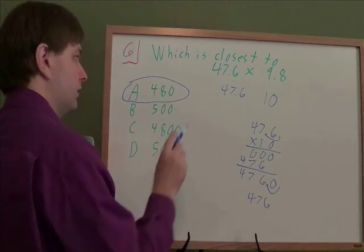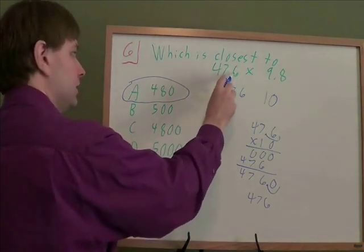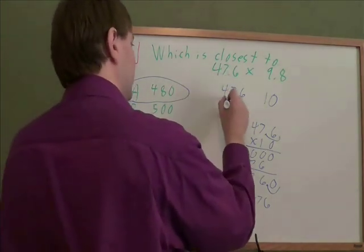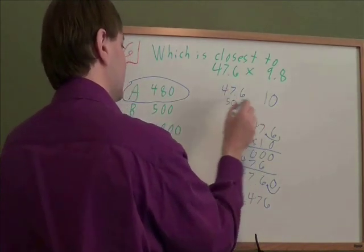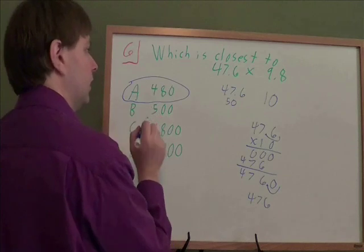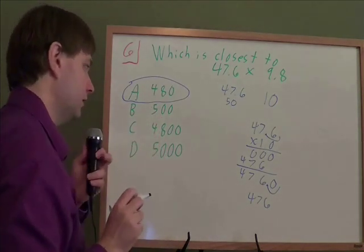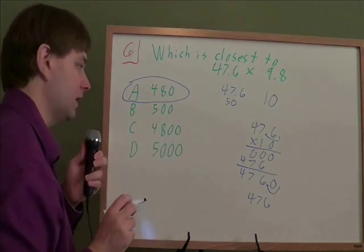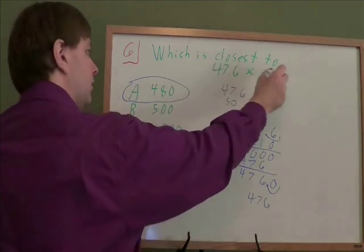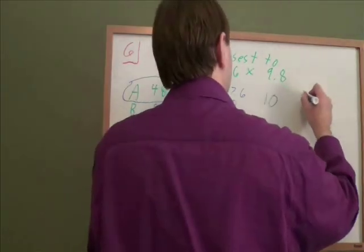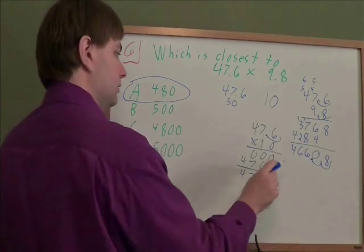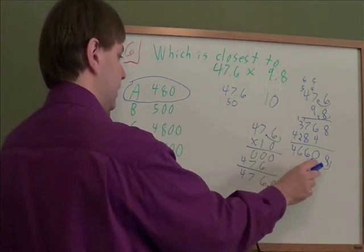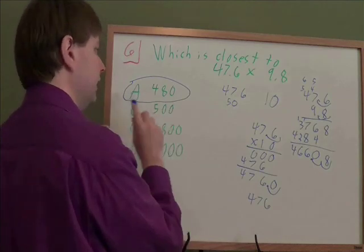Now you want to be careful here, because if you rounded too much, if you had rounded 47.6 all the way to 50, if you'd rounded it to the tens, then you would have gotten 500. That would have been wrong. If you don't, if you want to be completely certain that you don't make a mistake, you could just multiply out the original numbers. That wouldn't be too difficult. It turns out that if you did multiply the originals, you would get 466.08, which is still closest to 480.